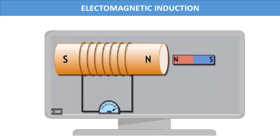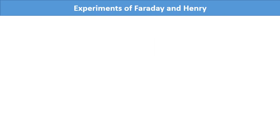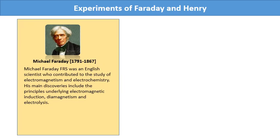The phenomenon in which an electric current is generated by varying magnetic fields is called electromagnetic induction. Electric generators work on this principle. We will now discuss and learn about three experiments by Faraday and Henry related to electromagnetism. Michael Faraday was an English scientist who contributed to the study of electromagnetism and electrochemistry. His main discoveries include the principles underlying electromagnetic induction, diamagnetism and electrolysis.